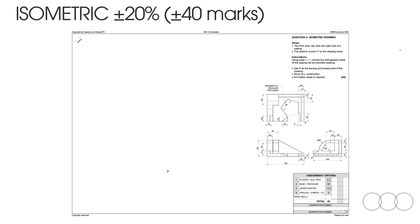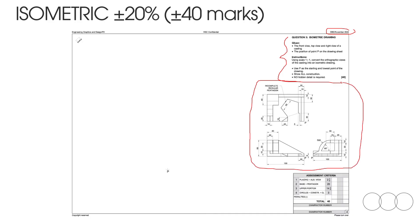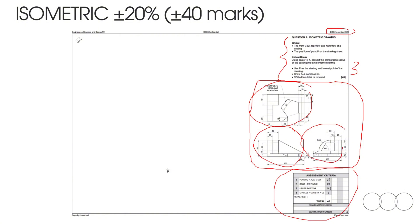Let's look at an example of an isometrical drawing from November 2024. On the page you're going to get the isometrical information regarding the question, you're going to get the orthographic views just below that, and then you'll get the assessment criteria. We know that this paper is done in third orthographic projection. So this will be your top view, this will be a front and this will be a right view.